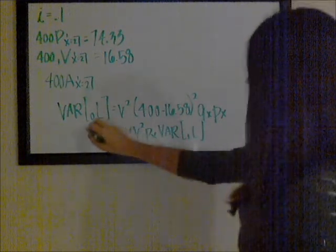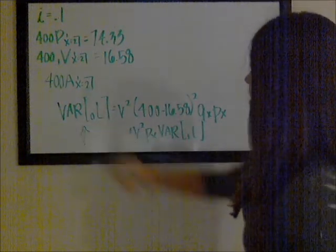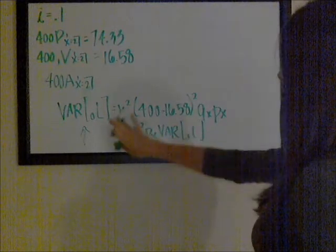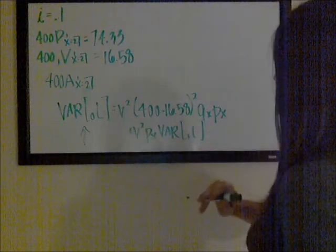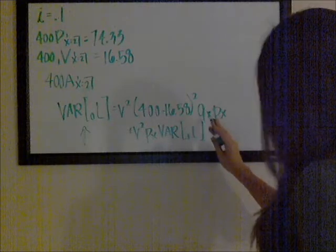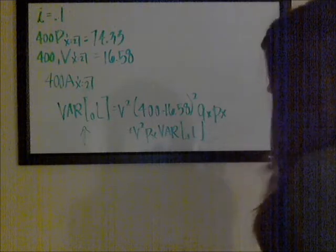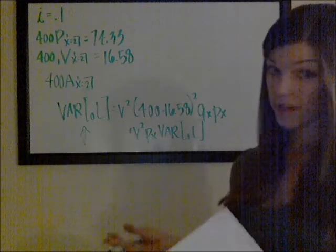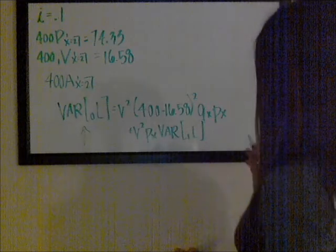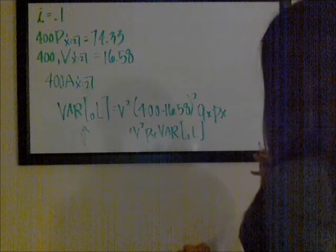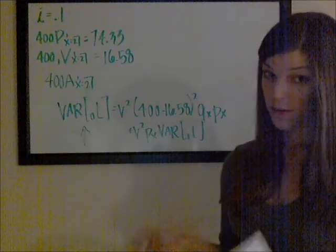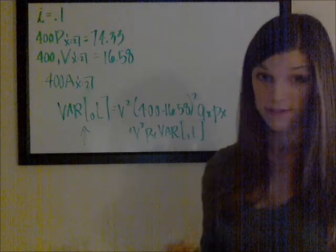This is what we're trying to find. We have the interest rate for v², but we can see that we're going to need qx (or alternatively px), and we're going to need the variance of the loss random variable at time 1. So let's find qx and px first.